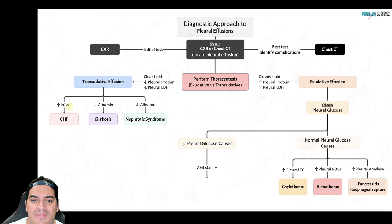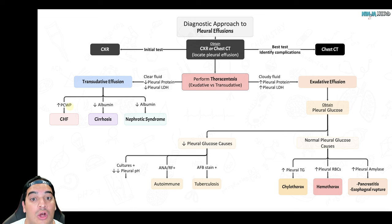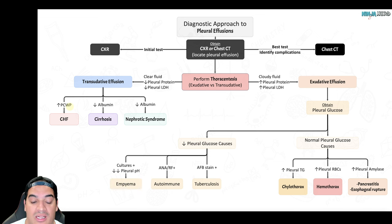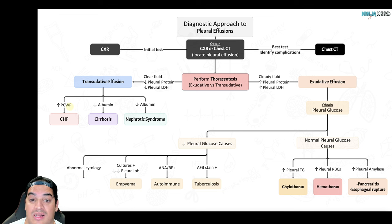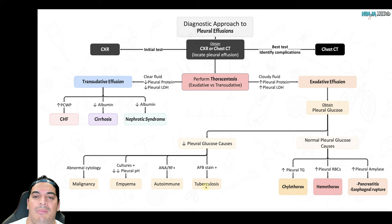For low pleural glucose: positive acid-fast bacillus stain suggests TB; positive ANA or rheumatoid factor suggests autoimmune disease; positive cultures with low pleural pH suggests empyema or complicated parapneumonic effusion; and abnormal cytology with blood or red blood cells suggests malignancy, typically advanced. Remember: low pleural glucose = MEAT (Malignancy, Empyema, Autoimmune, Tuberculosis).